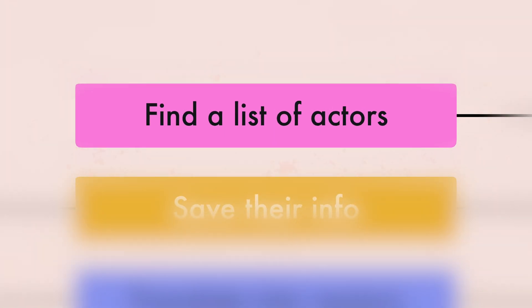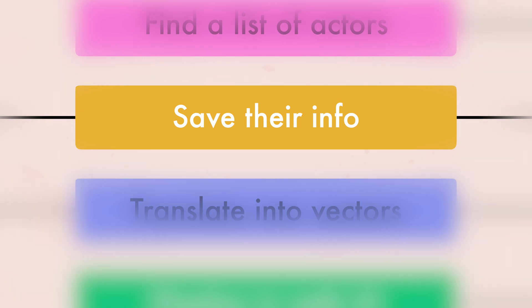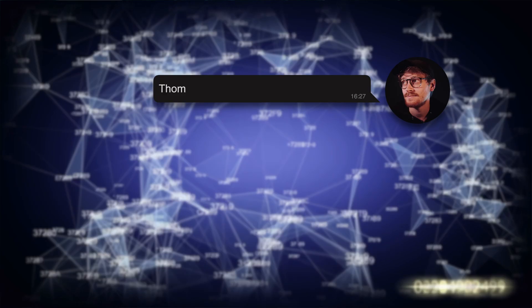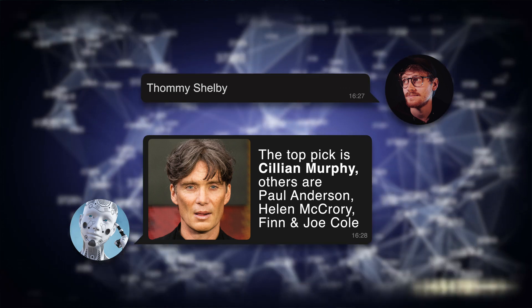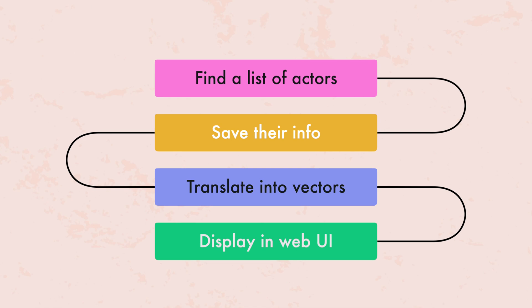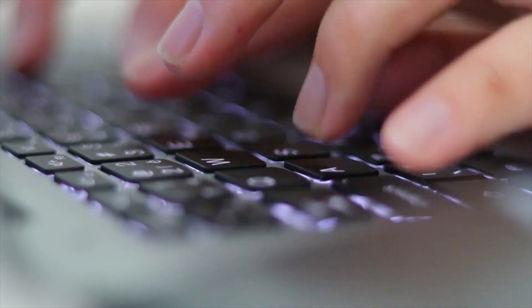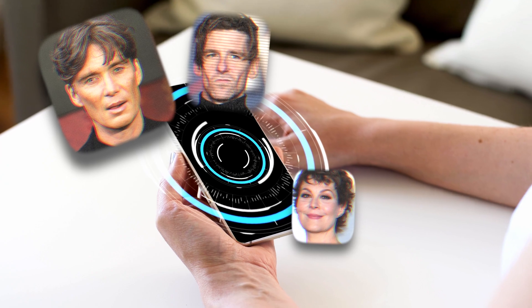Here's my plan. Somehow find a list of a lot of actors, maybe even sorted by popularity. Then save all their info — like a short biography, their age, what movies they play in, and also what they look like. This will become important. Shove all of that into a vector store, which translates the data into numbers and lets me find similar items. So when I enter Tommy Shelby, for example, it should give me actors that relate to Tommy Shelby — which is Cillian Murphy and the rest of the Peaky Blinders cast. And then finally display that info in a web UI that links to more info on the actor. Basically, I want to type in whatever I remember about the actor or actress and my app spits out the best matches.